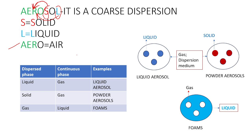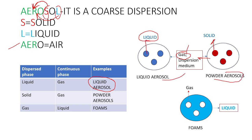There are different types of aerosols. One is liquid aerosol, where liquid is the dispersed phase distributed throughout the gas — the gas is the dispersion medium. Next is powdered aerosol, where the dispersion phase is solid and gas is again the dispersion medium. So we have liquid aerosol and powder aerosol.